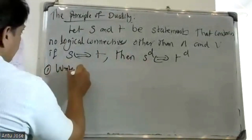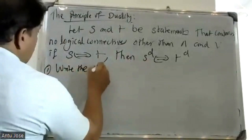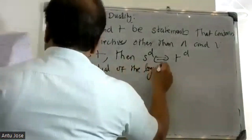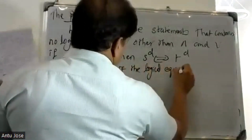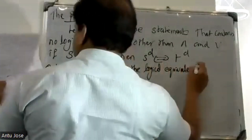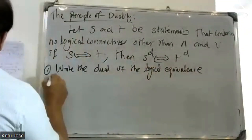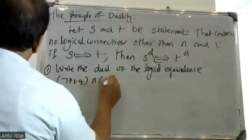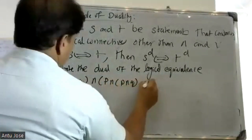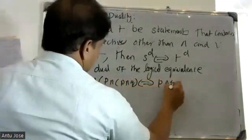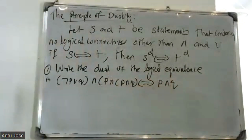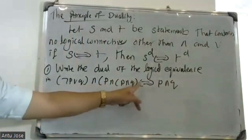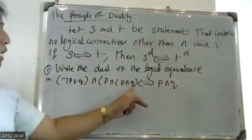Write the dual of the logical equivalence: negation p OR q AND p AND q, equivalent to p AND q. The left-hand side and right-hand side of the logical equivalence are: negation p OR q AND p AND q equivalent to p AND q.